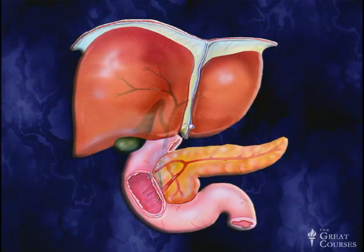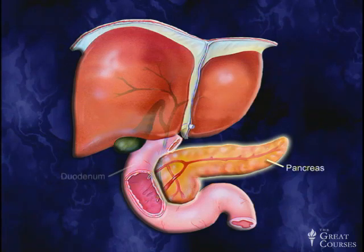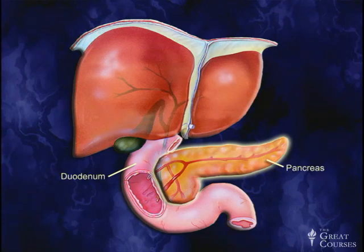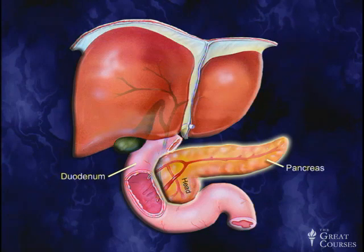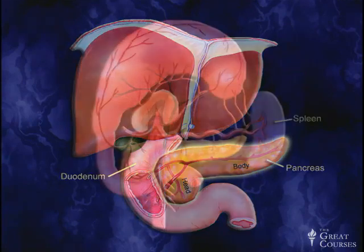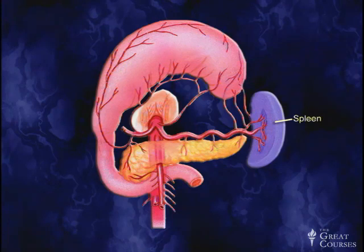Looking at the first slide, the pancreas is nestled in the loop of the duodenum. It goes upward and back. It is retroperitoneal, in the very back of the upper to mid abdomen, about 12 inches long. It tapers from right to left, with the head lying in the crook of the duodenum — very important clinically. The body of the pancreas is about in the middle of the abdomen, then sweeps up and tucks right into the spleen, which lies toward the back, almost touching the spleen as it wraps around the spinal column.